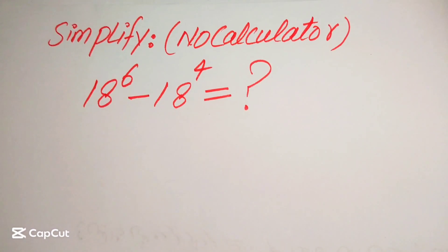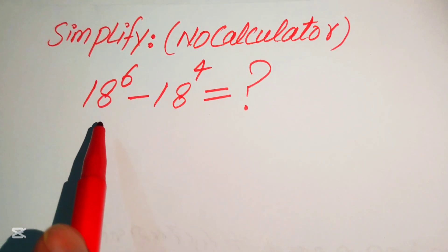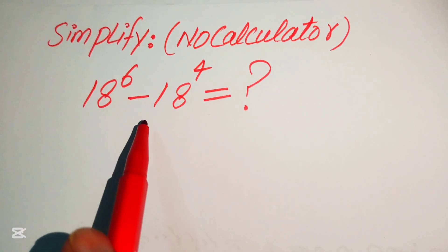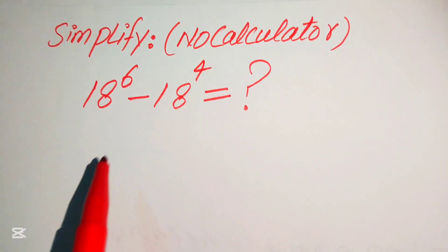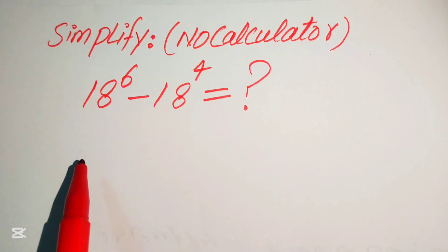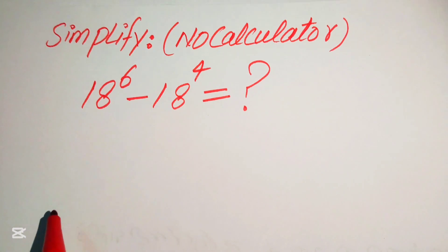Hello everyone. How to simplify this nice algebraic expression: if we have 18 to the power of 6 minus 18 to the power of 4, we write this algebraic expression into the simplified form.